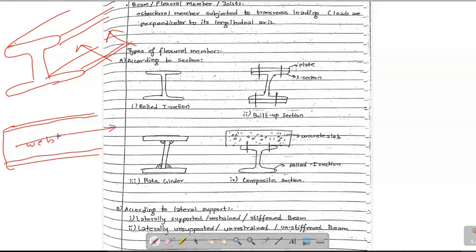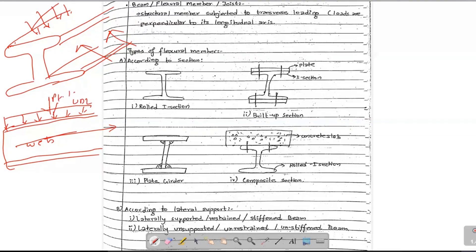It is called a longitudinal axis. If this is a longitudinal axis, it is perpendicular to the edge. This is a load — it is used as a beam. That means this is a loading; it can be transverse loading. If you have a longitudinal axis, you can load it. It can be a point load as a beam. It can be supported with a pin and roller.